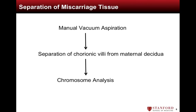We will now review the procedure for separating miscarriage tissue from maternal decidua for chromosome analysis. A MVA is first performed, followed by separation of chorionic villi from maternal decidua using a technique which we will demonstrate. The villi are then sent for chromosome analysis.